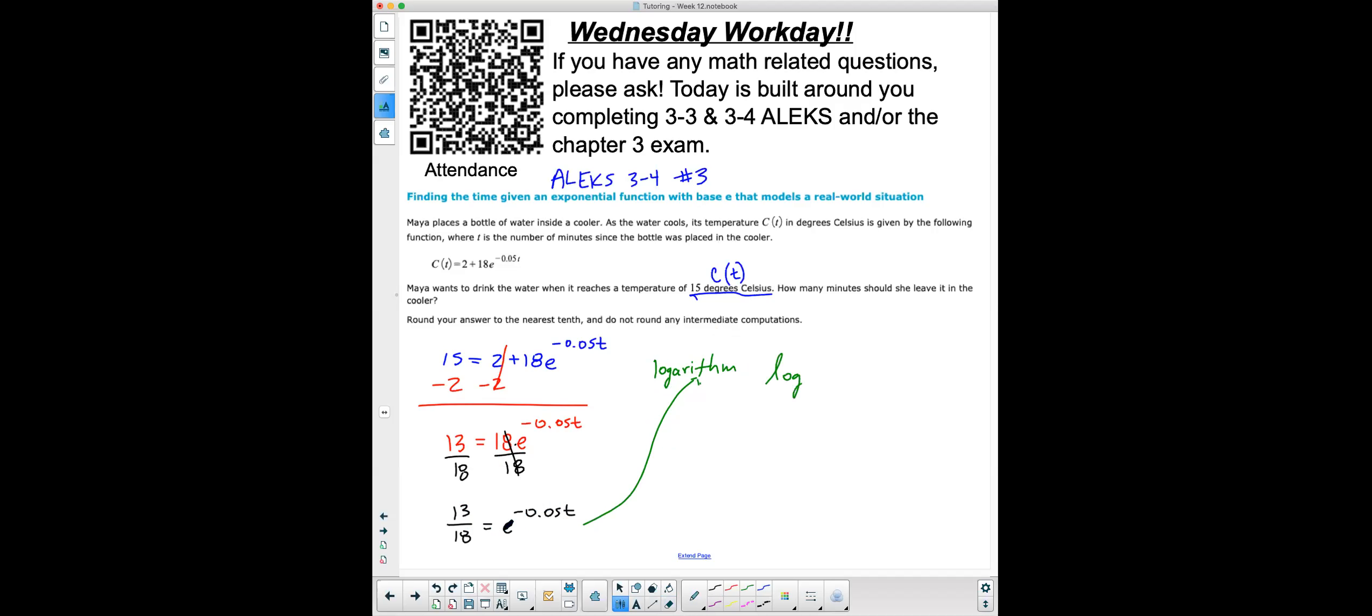I'm going to switch it to a logarithm. And so the way to do that is you write your log first, and then I'm going to write the base. When you convert, the number and the power switch places. So instead of it being the base raised to this power, it's going to be base raised to this number. So 13 over 18 will equal negative 0.05t.